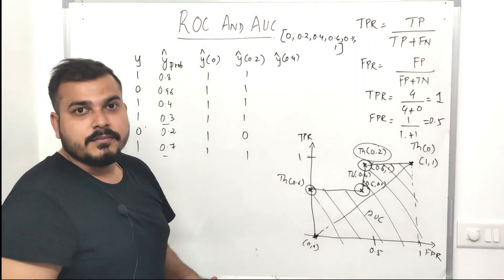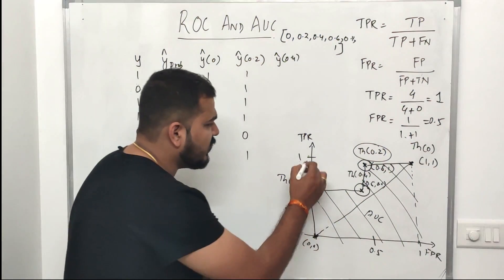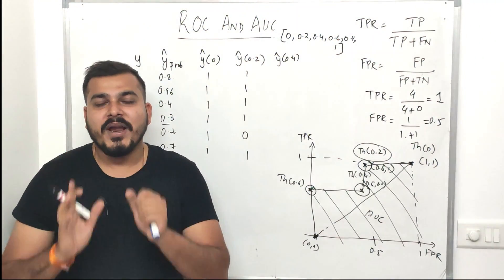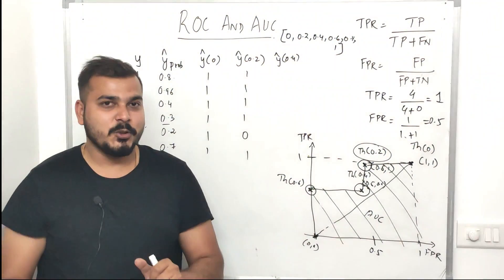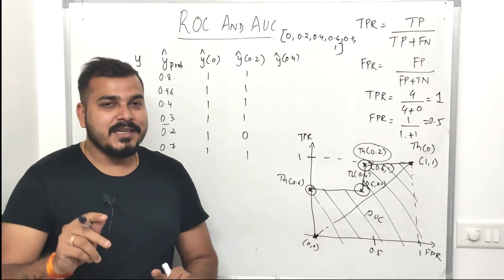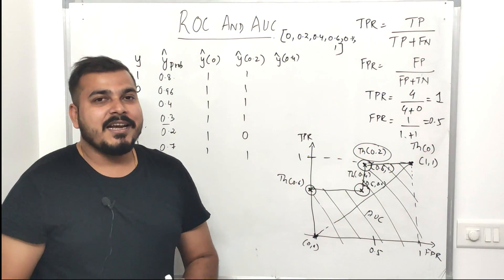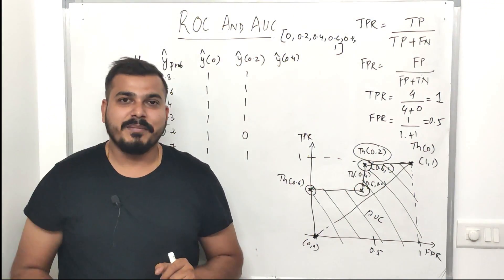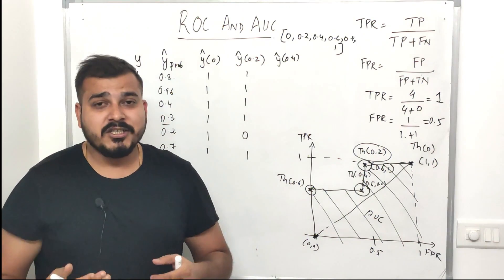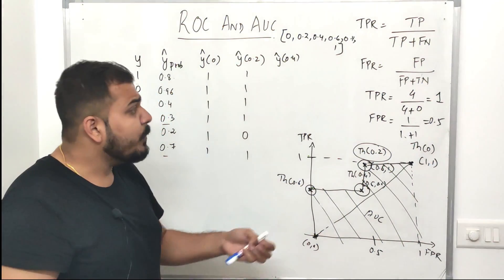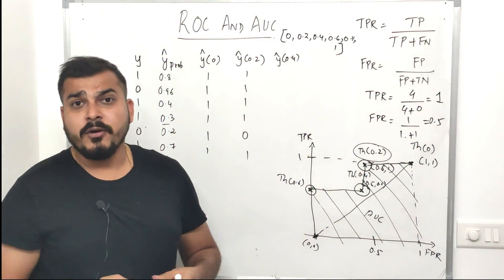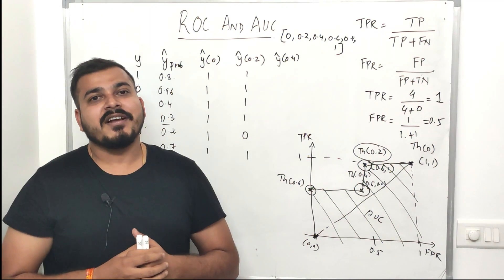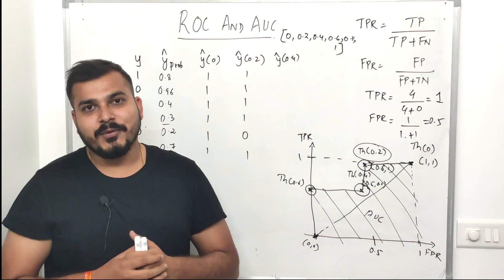This is how you interpret a ROC and AUC curve — AUC means area under the curve. This was all about this explanation. There is still one more part — performance metrics part 3 — where I'll discuss more classification metrics. I hope you like this video. Please subscribe the channel if you haven't already. See you in the next video. Have a great day, thank you, bye bye.